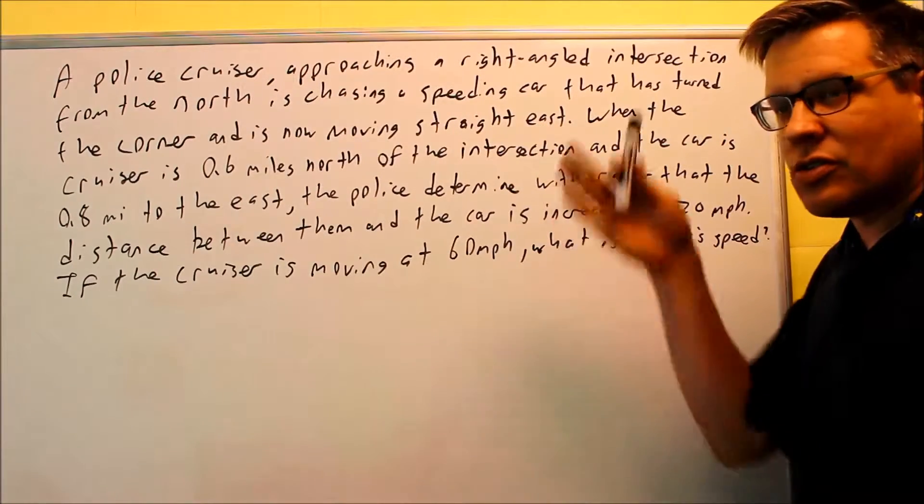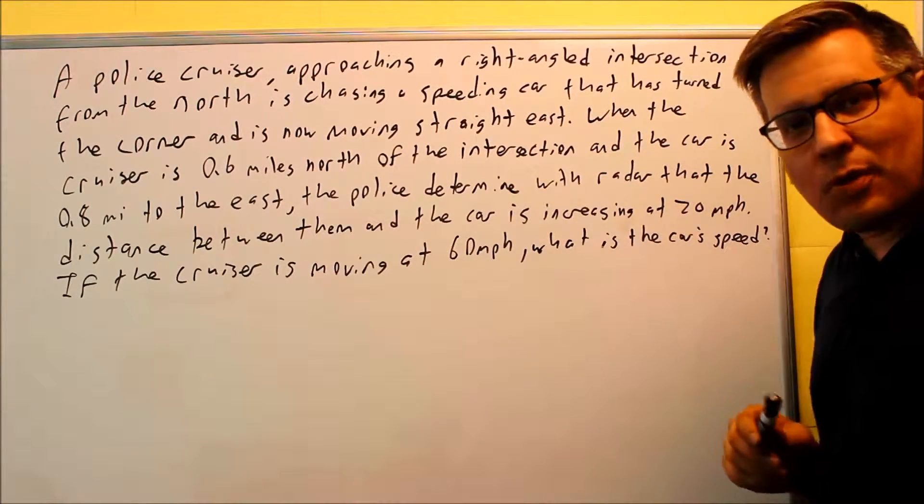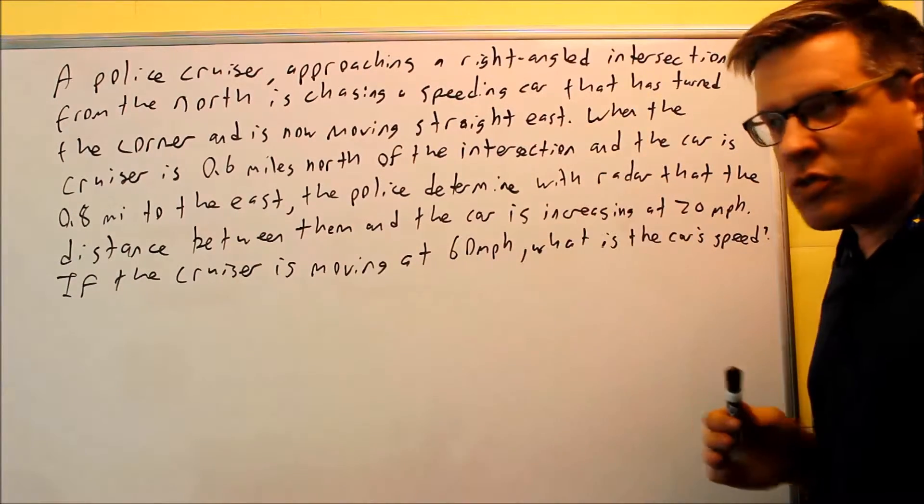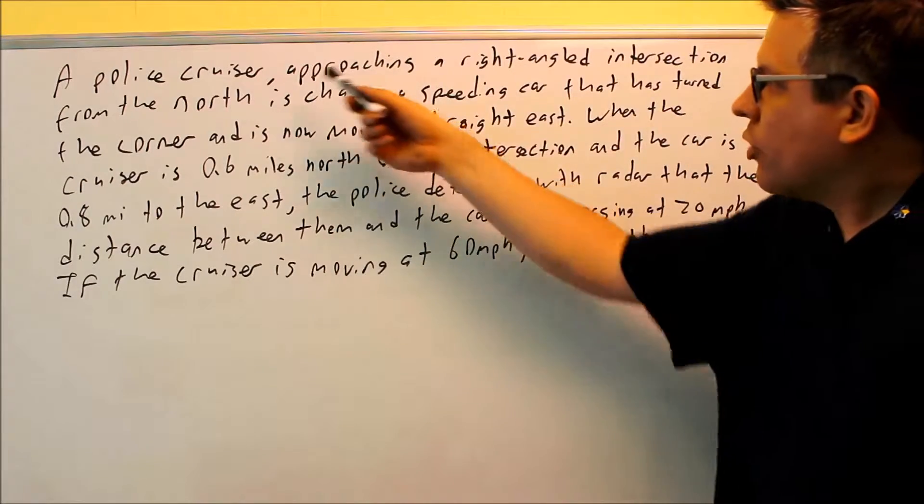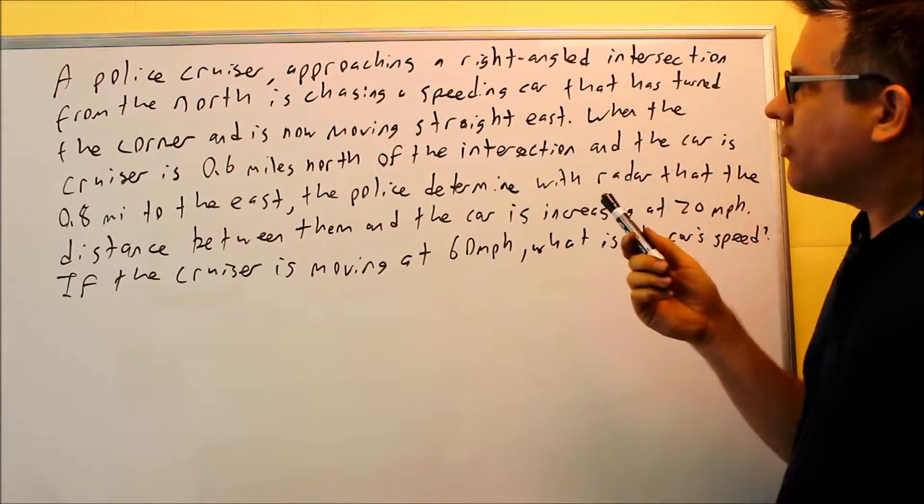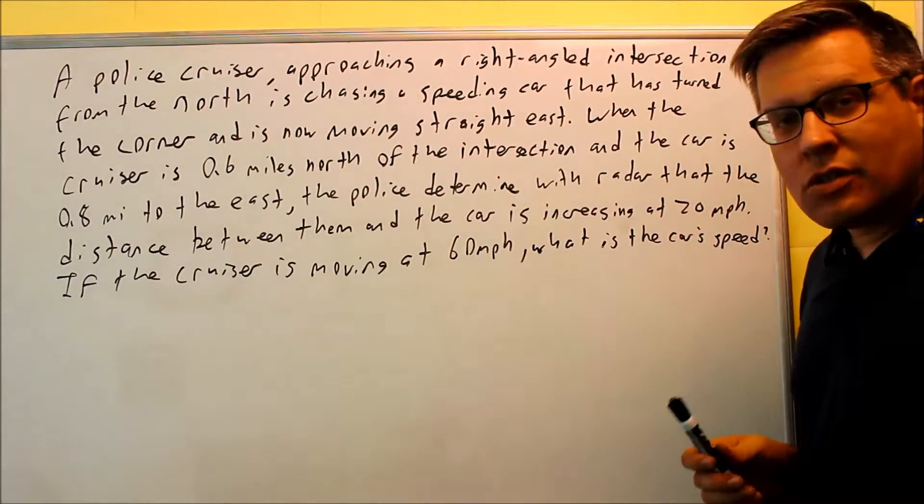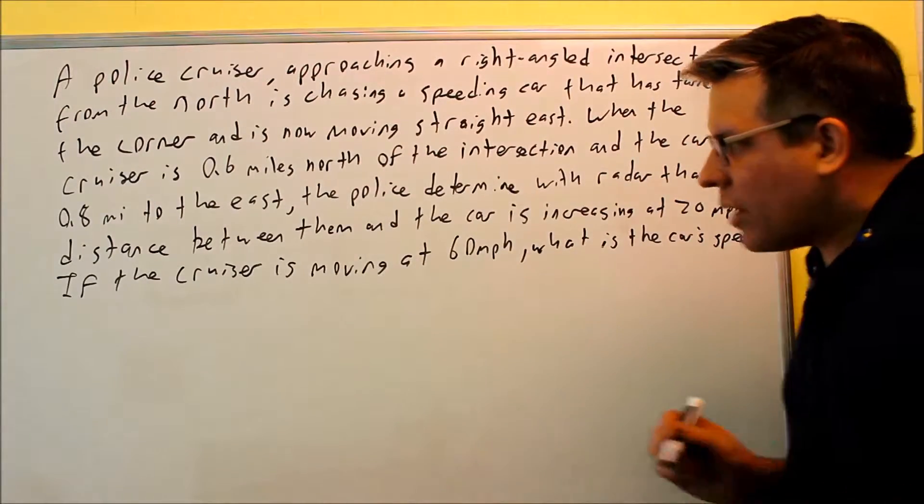Best way to handle these, if it looks intimidating, just take it sentence by sentence and then write down or draw diagrams as you go through. That's what we're going to do here. A police cruiser approaching a right-angled intersection from the north is chasing a speeding car that's turned the corner and is now moving east.